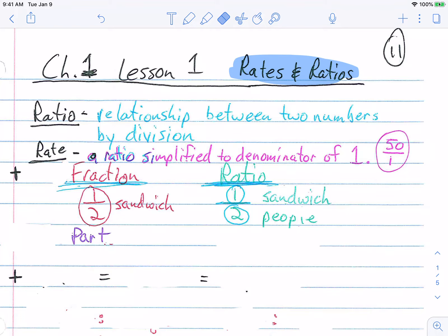Notice the fraction. It's still both of a fraction, but it's how you describe it. So a fraction is talking about a part and a ratio is talking about a relationship. So you're talking about the relationship between the sandwich and the people. So there's one sandwich for two people.